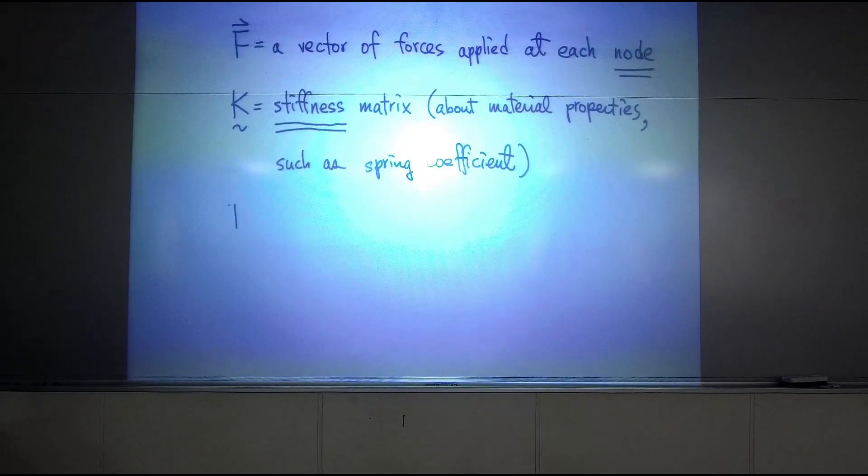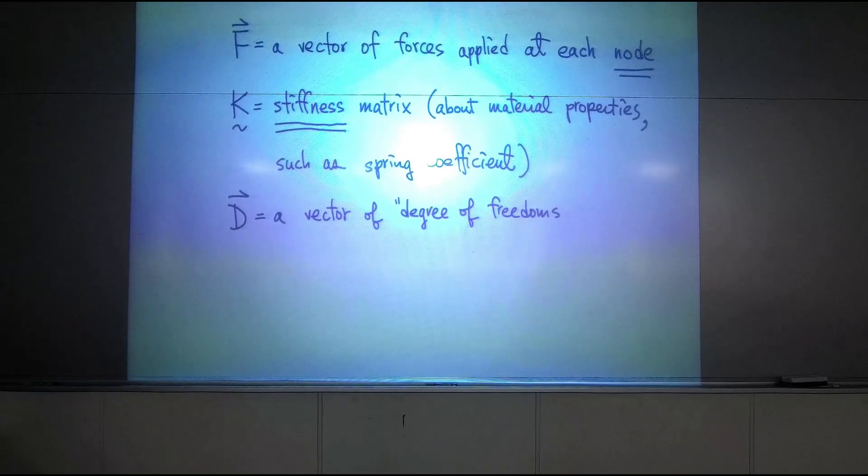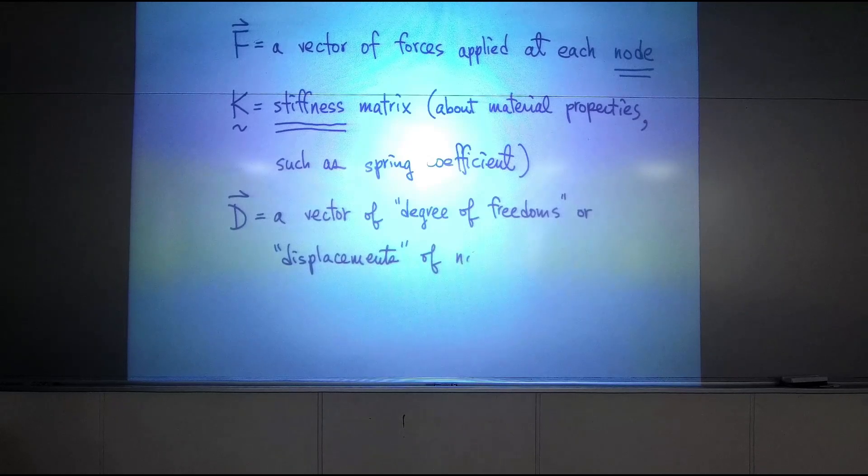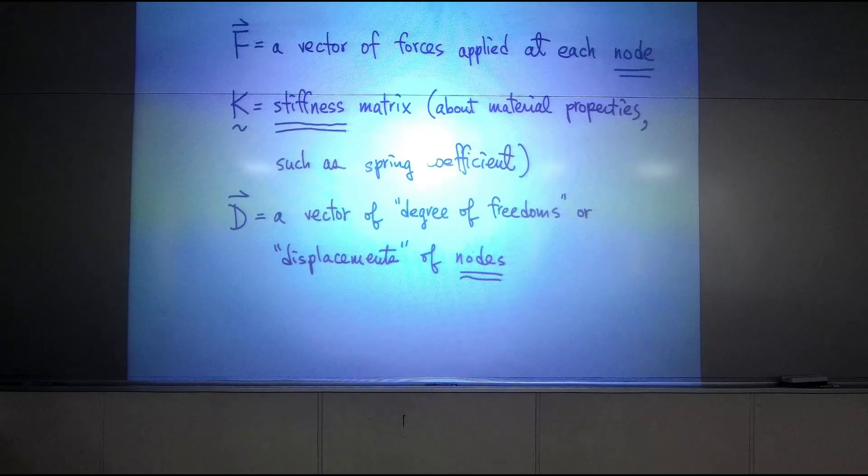So what is D? D is a vector. Sometimes we call it degree of freedom or displacement. Basically, the movement of nodes. So I need to tell you what is a node.